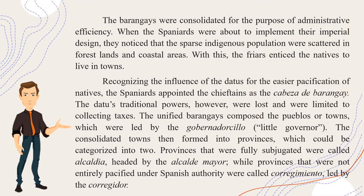The barangays were consolidated for administrative efficiency. When the Spaniards were about to implement their imperial design, they noticed that the sparse indigenous population were scattered in forest lands and coastal areas. The friars enticed the natives to live in towns. Recognizing the influence of the Datus for easier pacification of natives, the Spaniards appointed the chieftains as the cabeza de barangay. The Datus' traditional powers, however, were lost and were limited to collecting taxes. The unified barangays composed the pueblos or towns led by the gobernadorcillo or the little governor. The consolidated towns then formed into provinces, which could be categorized into two: provinces fully subjugated were called Alcaldia, headed by the Alcalde Mayor, while provinces not entirely pacified were called Corregimiento, led by the Corregidor.